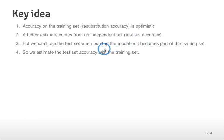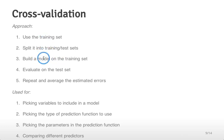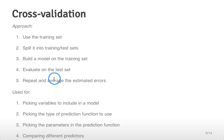One way to do this is to estimate the test set accuracy with the training set by breaking the training set up into its own sub training and test sets. This is the basic approach of cross-validation: you take the training set, split it into sub training sets and test sets, build your predictive model on the sub training set, evaluate it on the sub test set, then repeat and average the estimated errors.